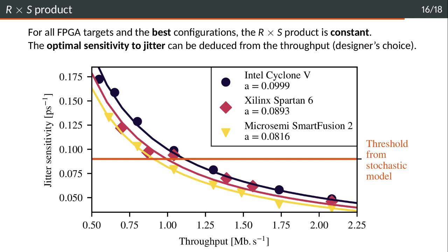The second thing is that when we generated many configurations, we observed that for all FPGA targets and the best configurations that we obtain, the R times S product is a constant. For the configuration with a given throughput and the best jitter sensitivity, we obtain a constant for the R times S product. That's what is plotted here on the graph. That allows the designer to just specify the throughput, which is usually known, and then directly deduce what is the associated jitter sensitivity for this throughput. The designer does not have to deal with this notion of jitter sensitivity, which might be tricky to handle.